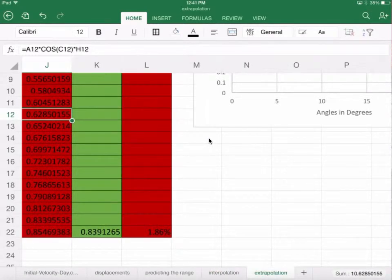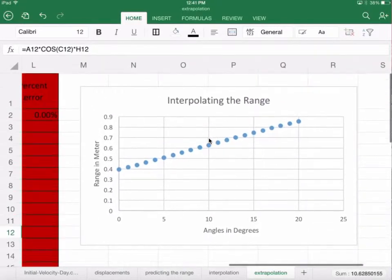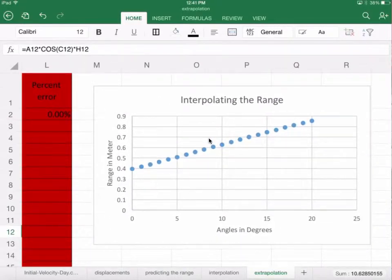Extrapolation is when you can go beyond the two points that you have well defined. In interpolation we have two points that are well defined, 0 and 20 degrees, and all of the points in between are predictions.